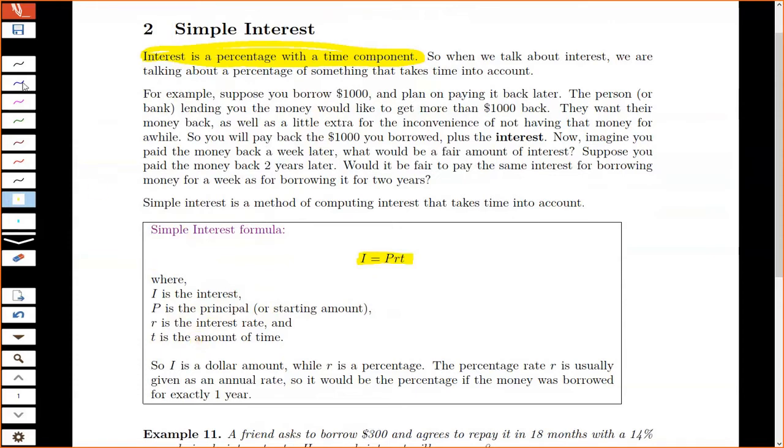Now one thing that I want to note with interest rates, they're typically given as an annual rate. So that's something to keep in mind. The percentage rate R is generally given as an annual rate. So when we say something like 5% interest, that means that if you were to borrow for exactly one year, we would just charge 5%.